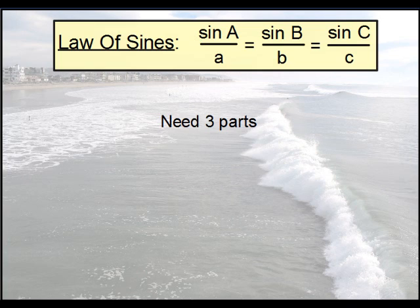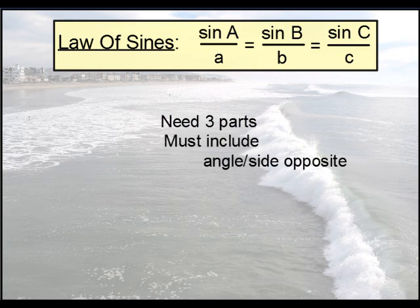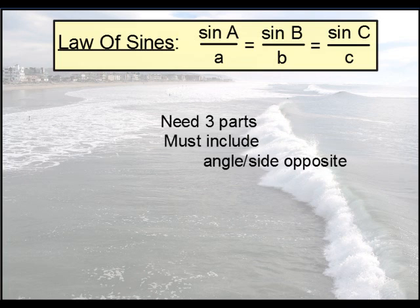In order to use this formula, you're going to need at least three of the six parts. And yes, there are six parts. You have three sides and you have three angles. And of those three parts, two of them must be an angle and its opposite side. Otherwise, you're going to have to use a different formula to help figure out the rest of the triangle.